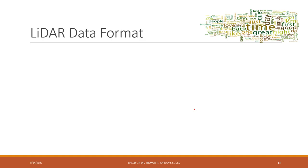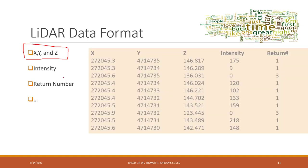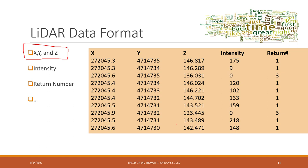If we look at the LiDAR data, it normally contains X, Y, and Z coordinates of the object, as well as intensity and the number of returns. For a professional LiDAR dataset, it will have the X, Y, Z coordinates, the intensity value, and information indicating whether it is the first return, second return, or third return — which return captured that signal.